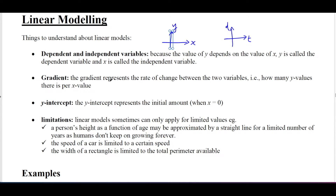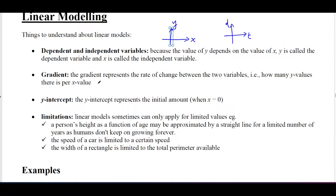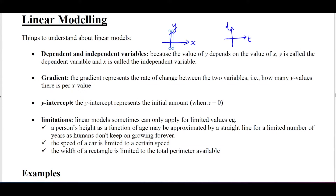The gradient represents the rate of change between the two variables. So the gradient of these graphs has a meaning — for example, how many y-values there are per x-value. The y-intercept represents the initial amount, so when x equals zero. We'll go into more detail on both.